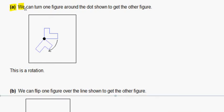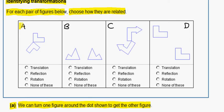In problem A, we can turn one figure around the dot shown to get the other figure. We start with this figure and then rotate it to get the other figure. This is a rotation. So in figure A, we have a rotation.